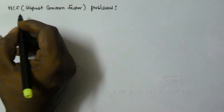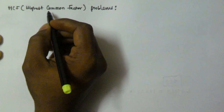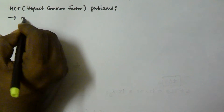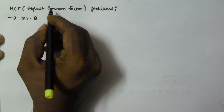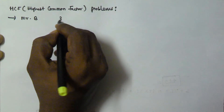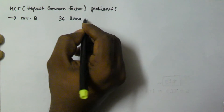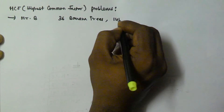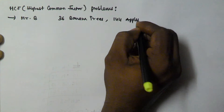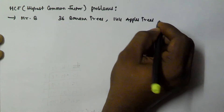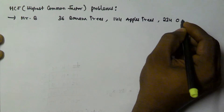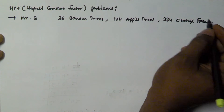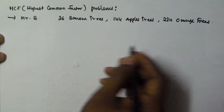Hello friends! In this video we will see a problem related to HCF — that is Highest Common Factor. There is one person, Mr. B, and he wants to plant 36 banana trees, 144 apple trees, and 234 orange trees in his garden.